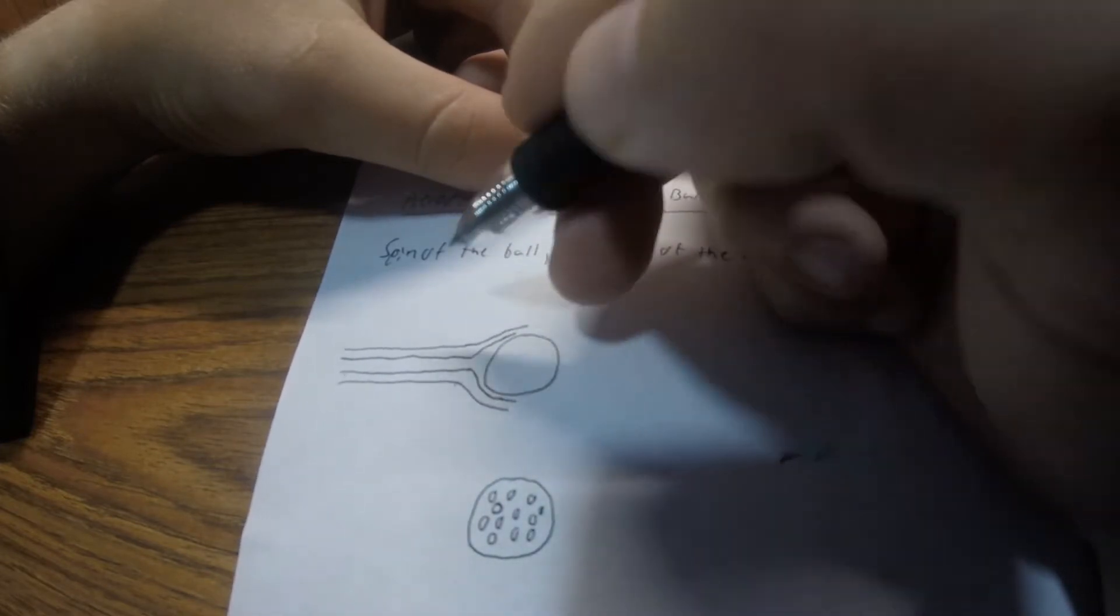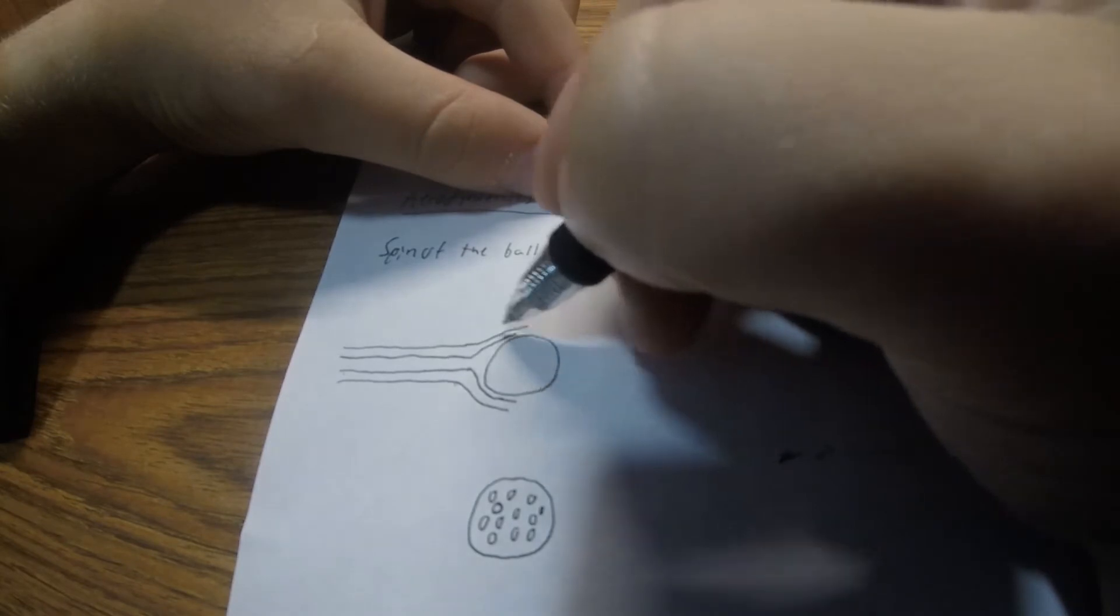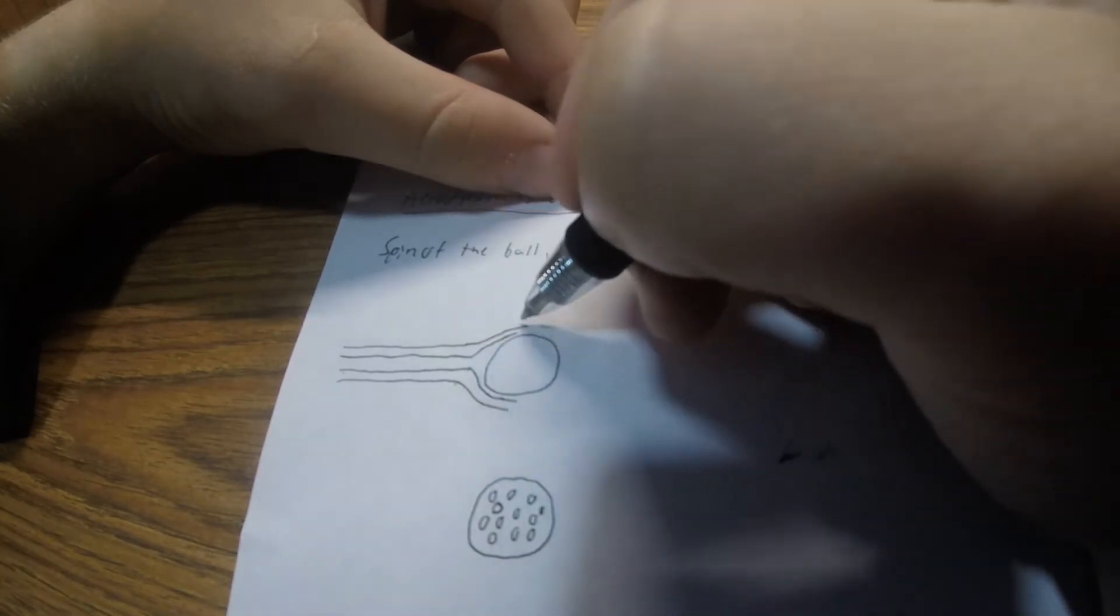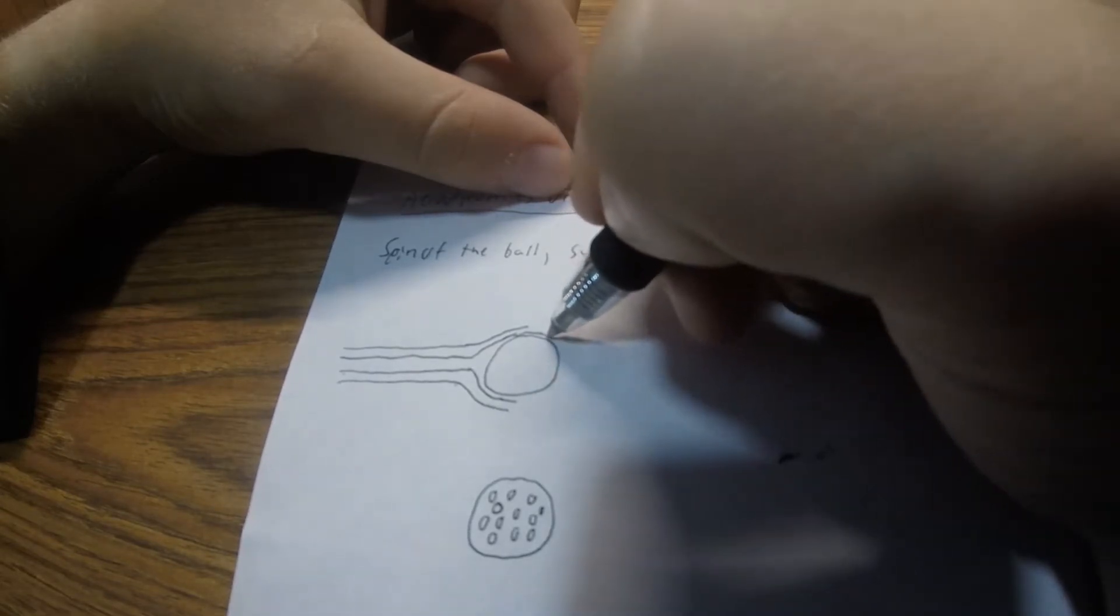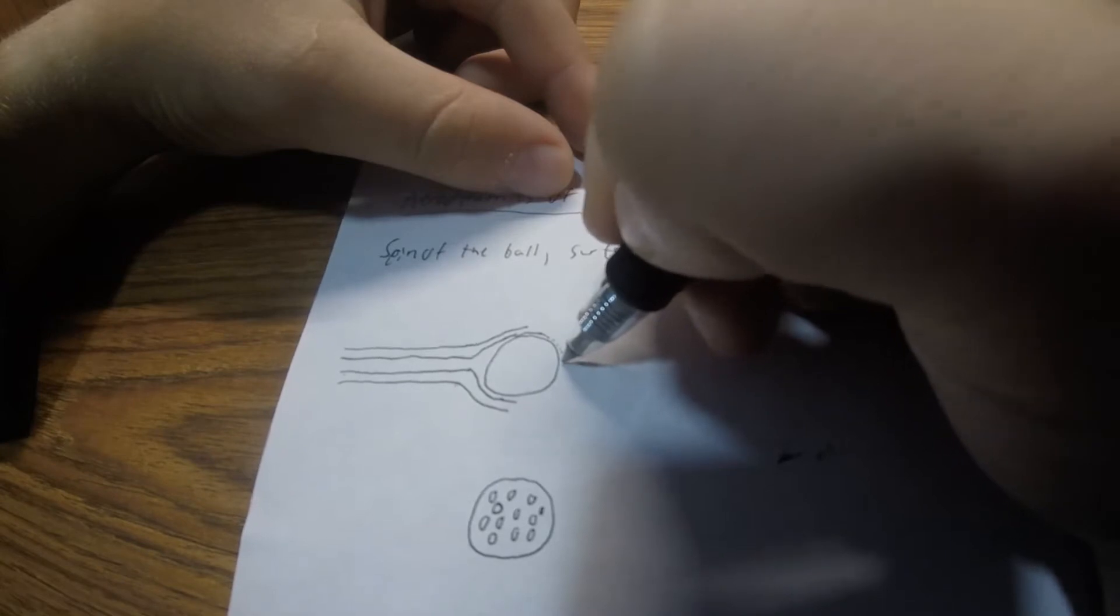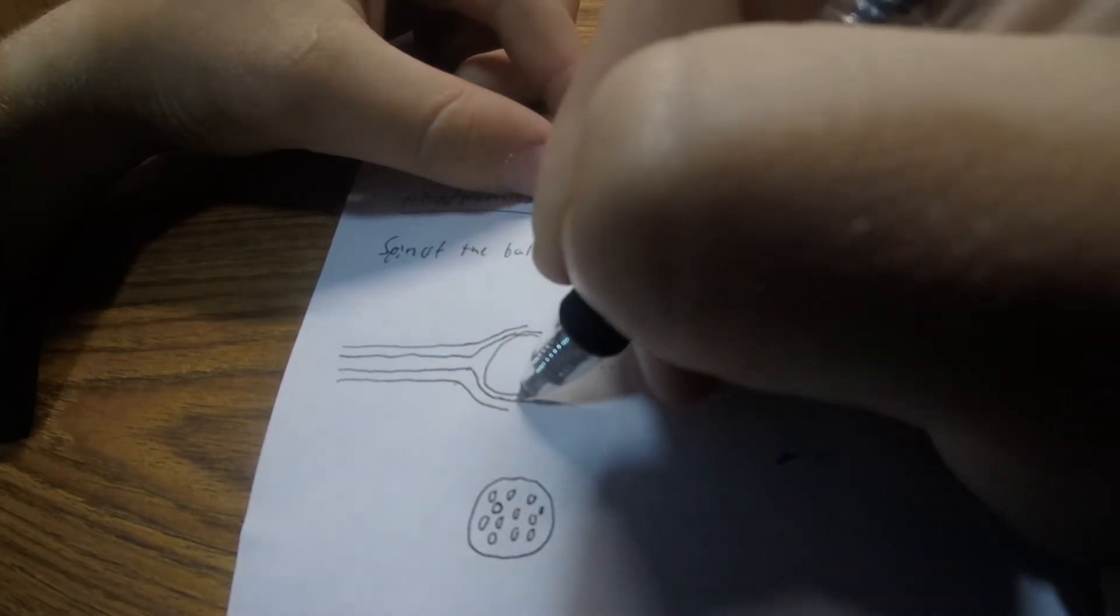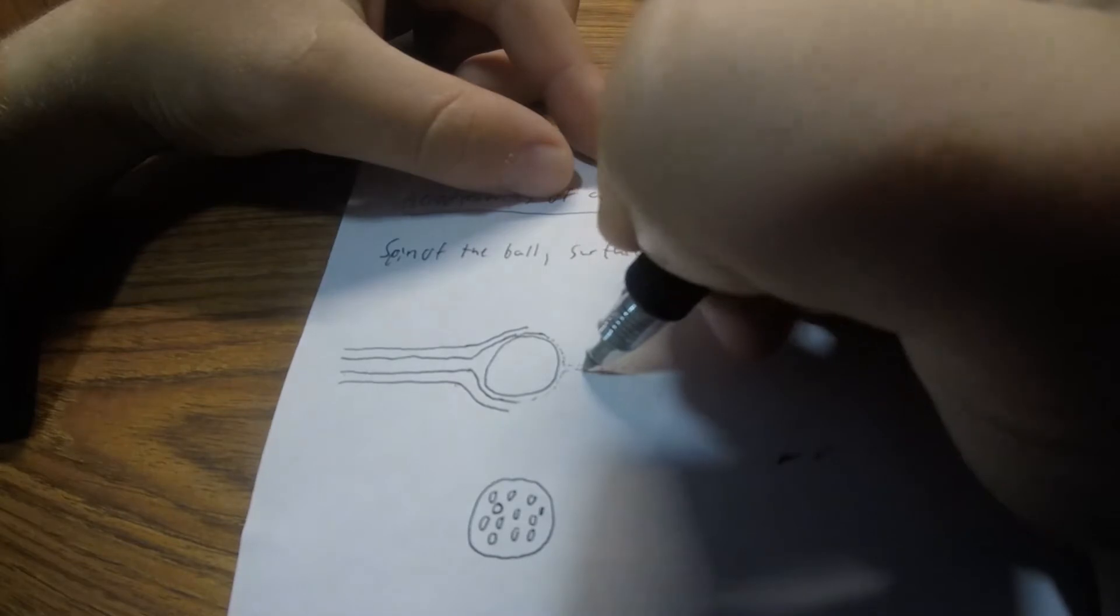But what happens is that this air, these pathlines of air, they don't have enough energy to go over the entire ball and then come off smoothly like here. This does not happen.